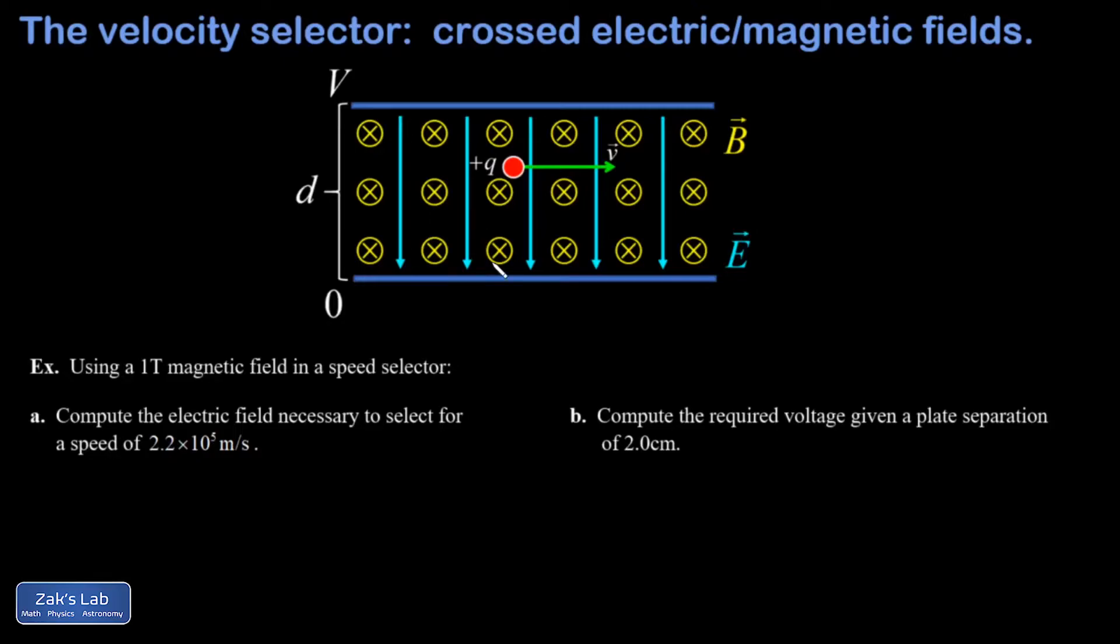Since the magnetic force is velocity dependent, according to the Lorentz force law, it should be possible to find a special speed at which the electric and magnetic forces balance each other.